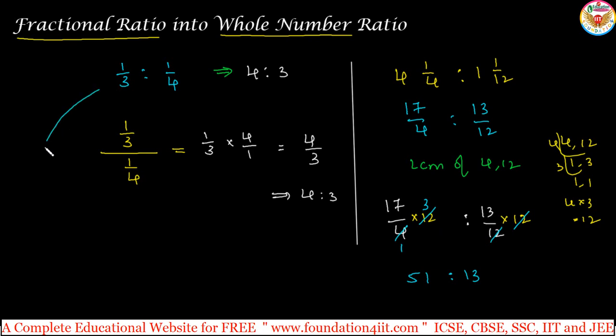Same concept even if you apply this, same method, alternate method. 1 by 3 is to 1 by 4. Denominators 3 and 4. 3 comma 4 LCM is 12 because 3 and 4, no common factors. Just multiply by 12. You can simplify this, 3 ones are 3, 4, 4 ones are 4, 3. So 4 is to 3.